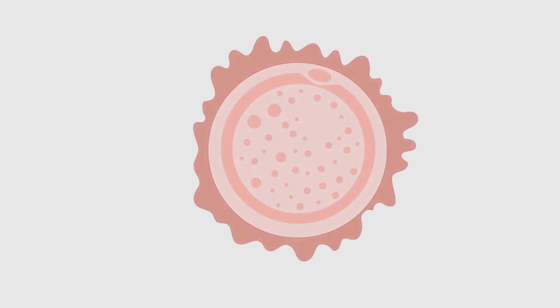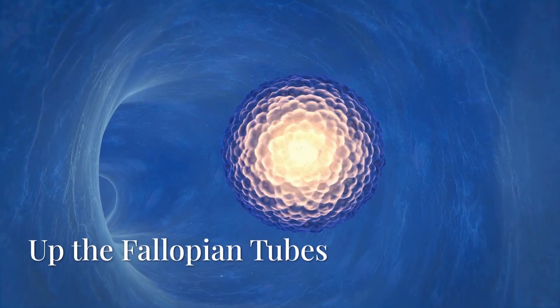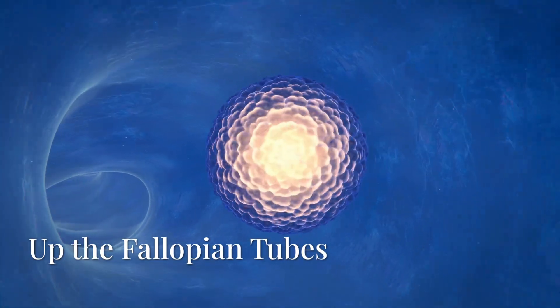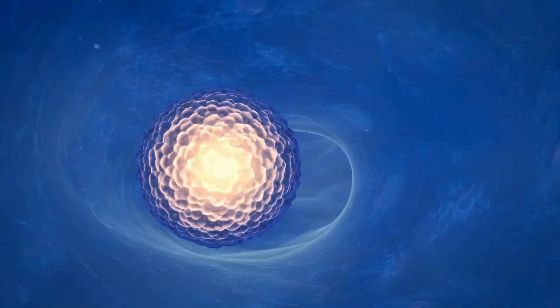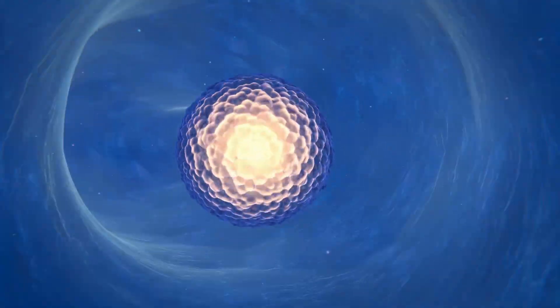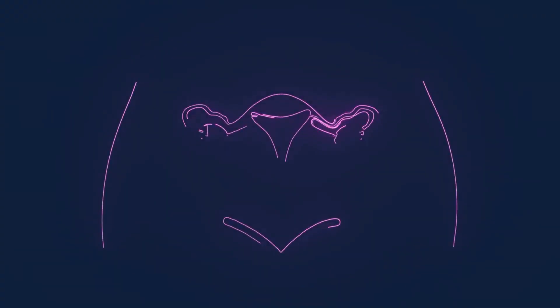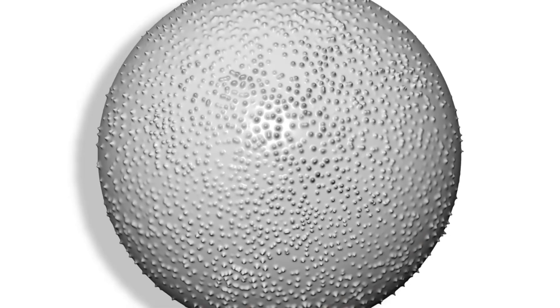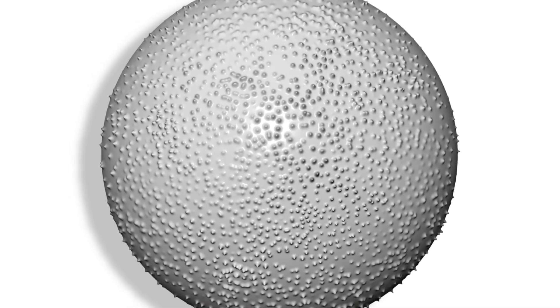The sperm are searching for something very specific: the fallopian tubes. The fallopian tubes are like narrow tunnels leading from the uterus to the ovaries. Only one tube holds the egg, so the sperm have a 50-50 chance of choosing the right path. It's a challenging climb, and many sperm won't make it.